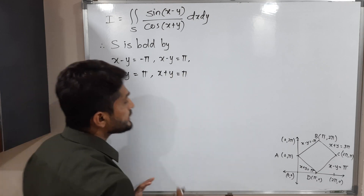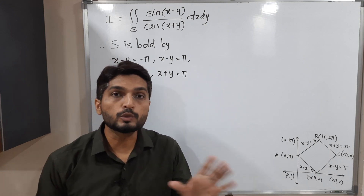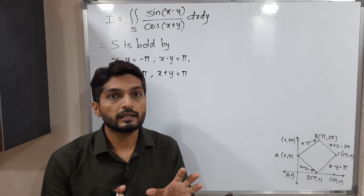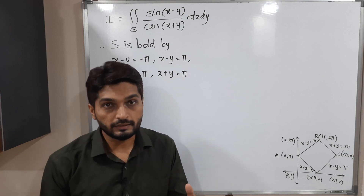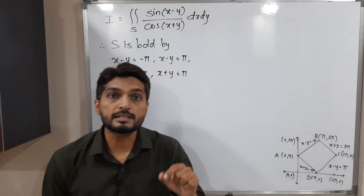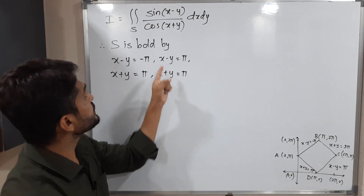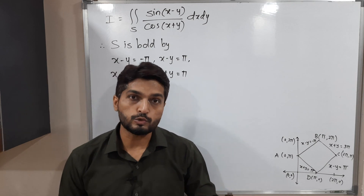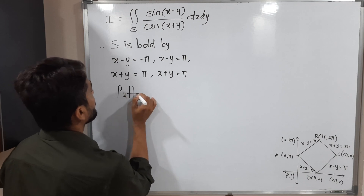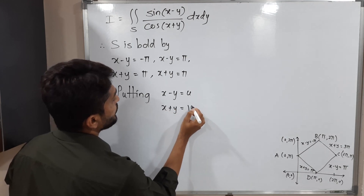We have to solve this problem with the help of a suitable change of variables. We observe the given question and find a pattern. The term x minus y appears repeatedly, so we put x minus y equal to u. And x plus y also appears repeatedly, so we put x plus y equal to v.